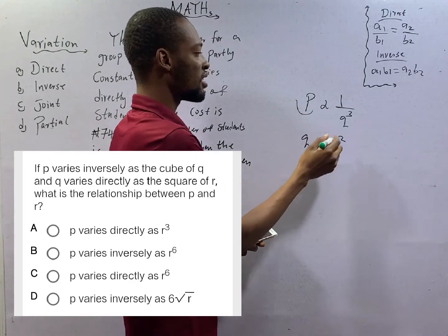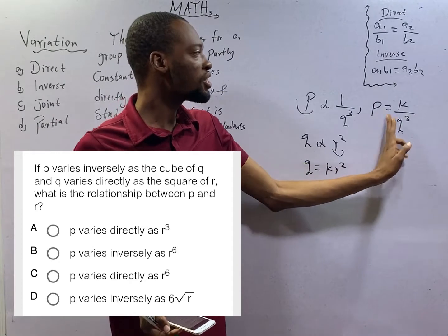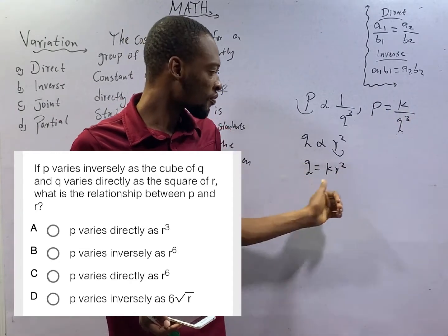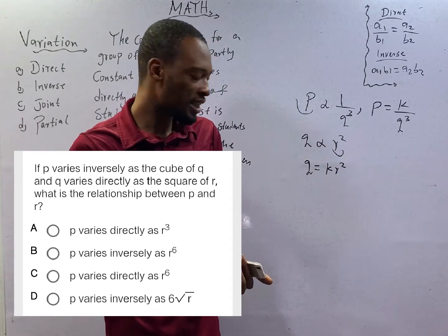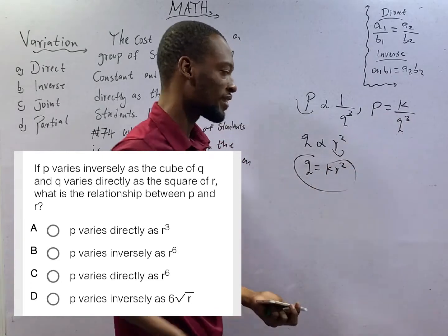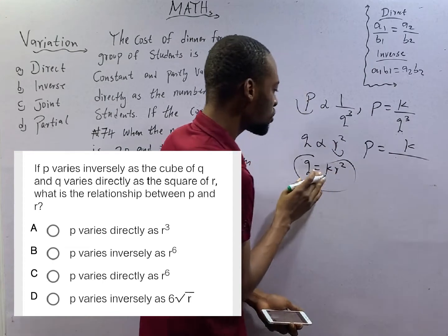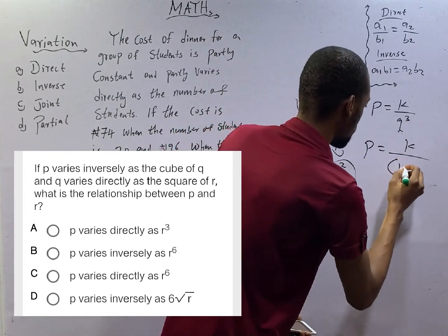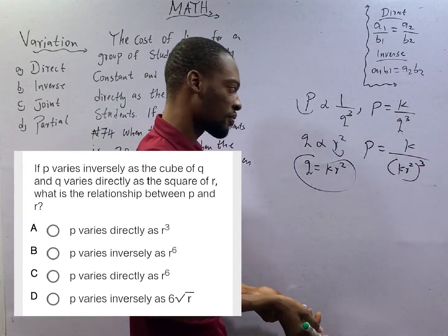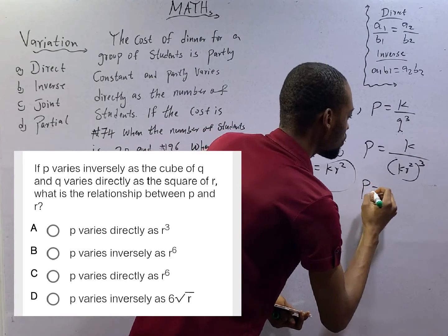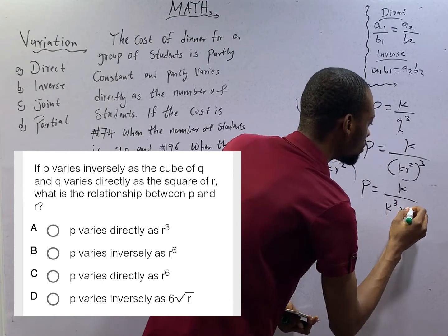There is P here and there is R here. So what is the relationship between this guy? P equals K over Q raised to the power of 3. And for the second part, Q equals K times R squared. This will simply be P equals K over K cubed times R raised to the power of 6.